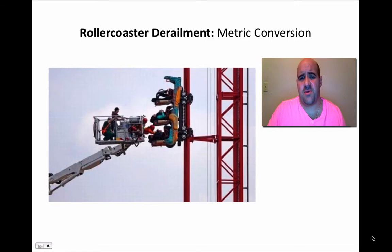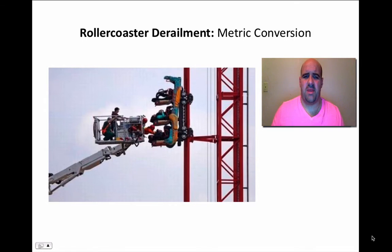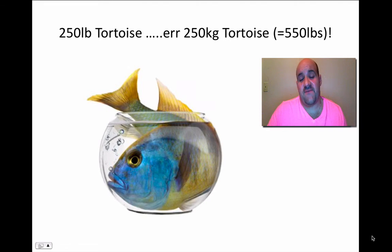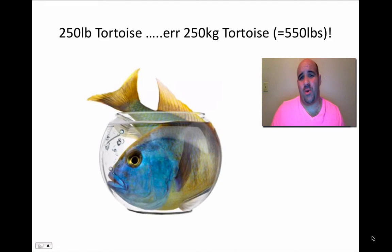Rollercoasters can derail — Space Mountain in Tokyo is an example. Rollercoasters have to be maintained, and sometimes they change from metric to English units or change design schematics. It was a conversion error — the rollercoaster derailed because the bolts were about one millimeter too small or too big. The LA Zoo had a giant 250-kilogram tortoise they lent to a college. The college thought 250 meant pounds, built a pen that wasn't big enough, and the 550-pound turtle broke out of its enclosure — another unit conversion error.